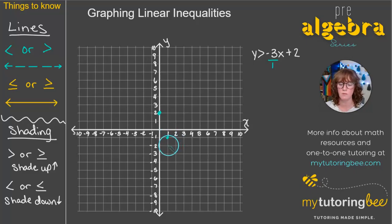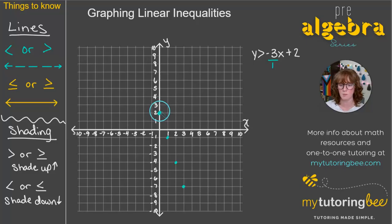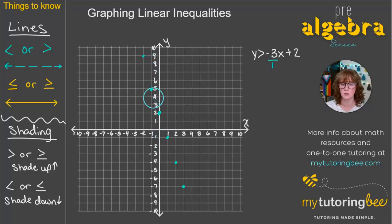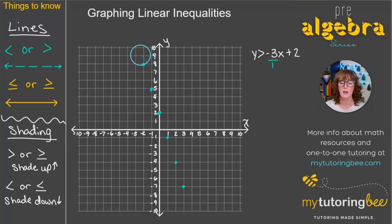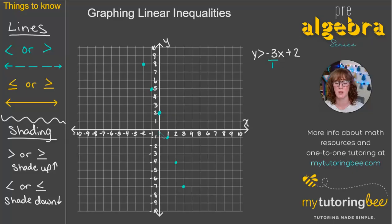We can make a few of those points — keep going down 3, over to the right 1, down 3, right 1. We can also go the opposite direction: up 3 and to the left 1, up 3 and to the left 1. I noticed one point was out of place because it wasn't perfectly in line with the others already on the graph, so I corrected it.